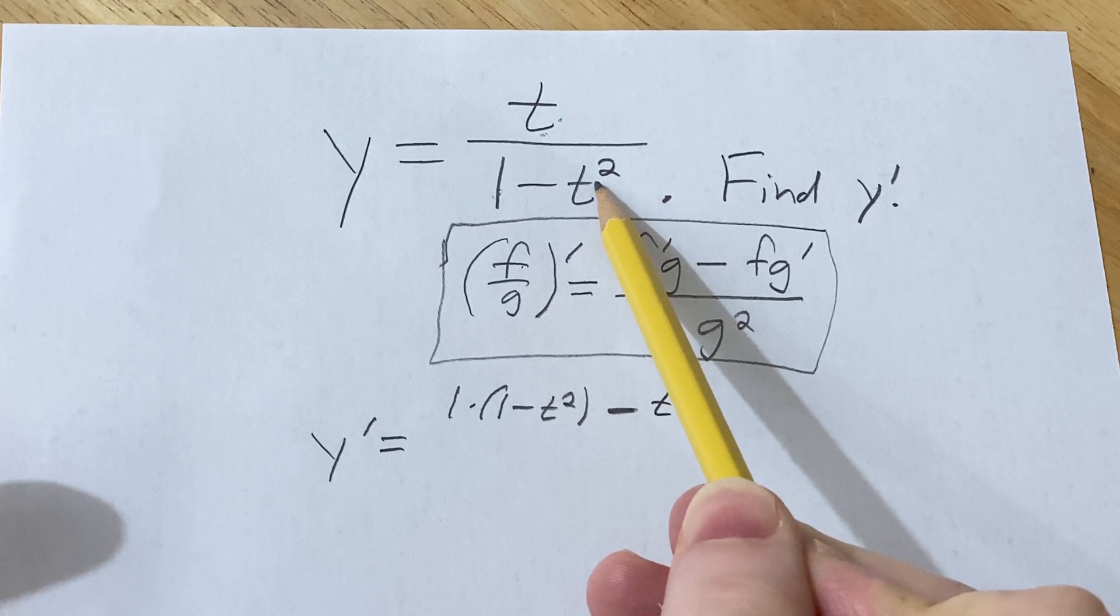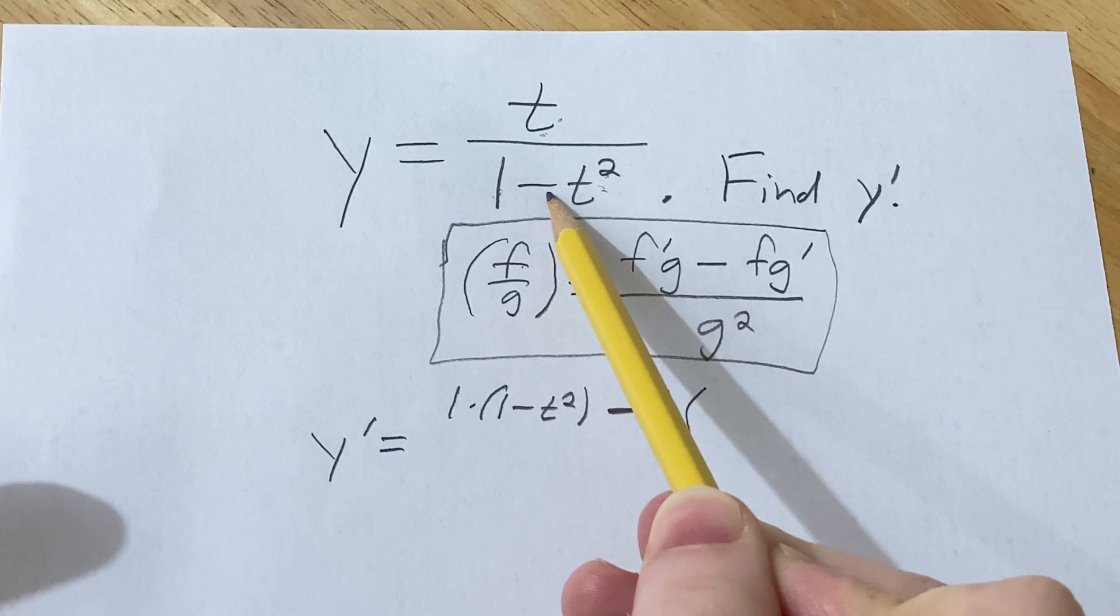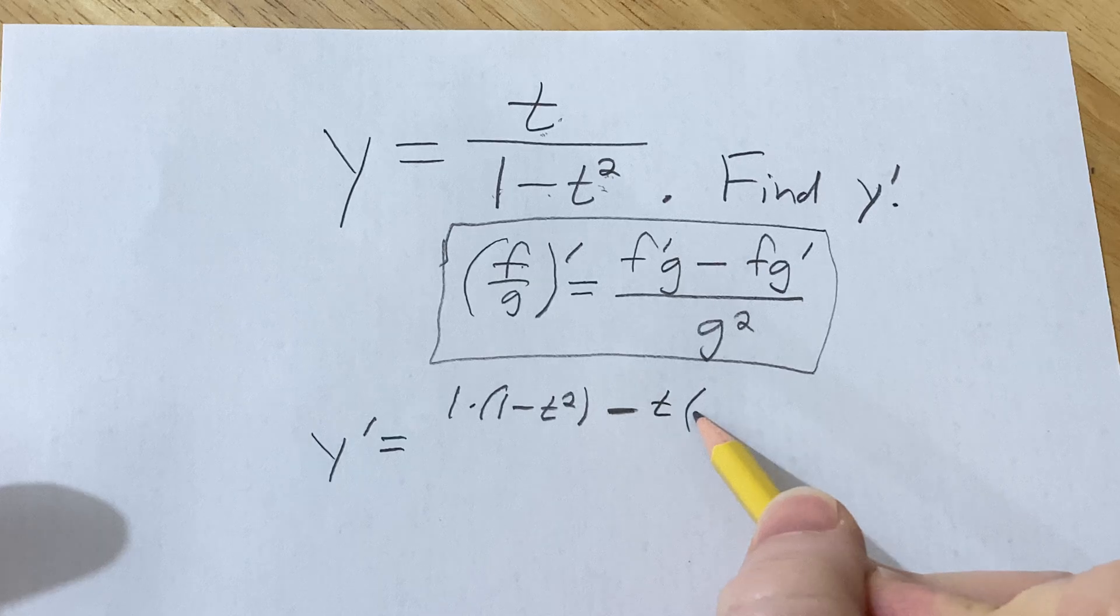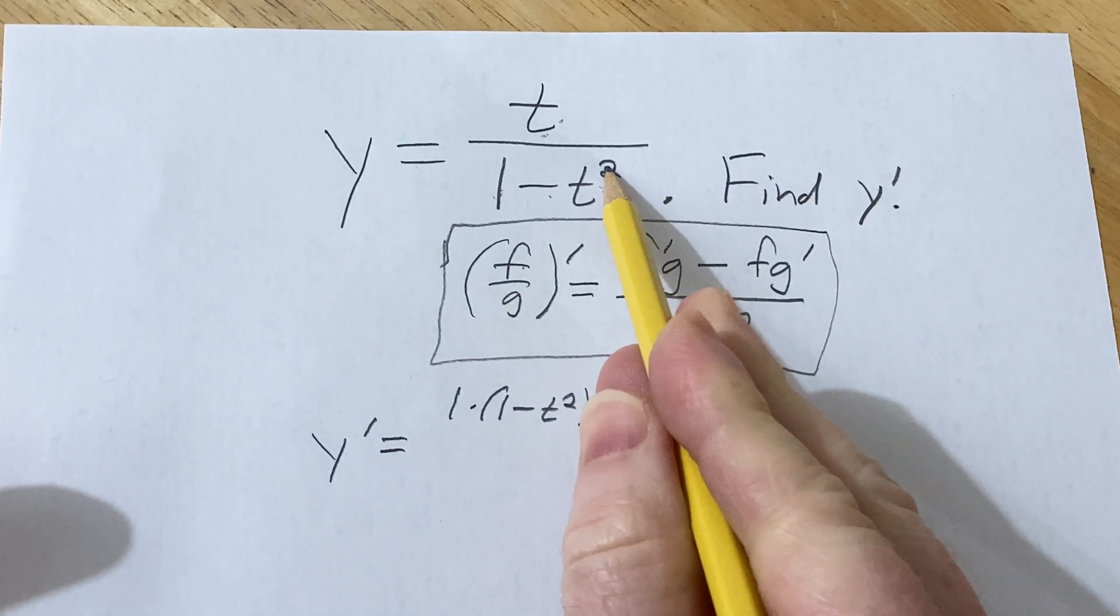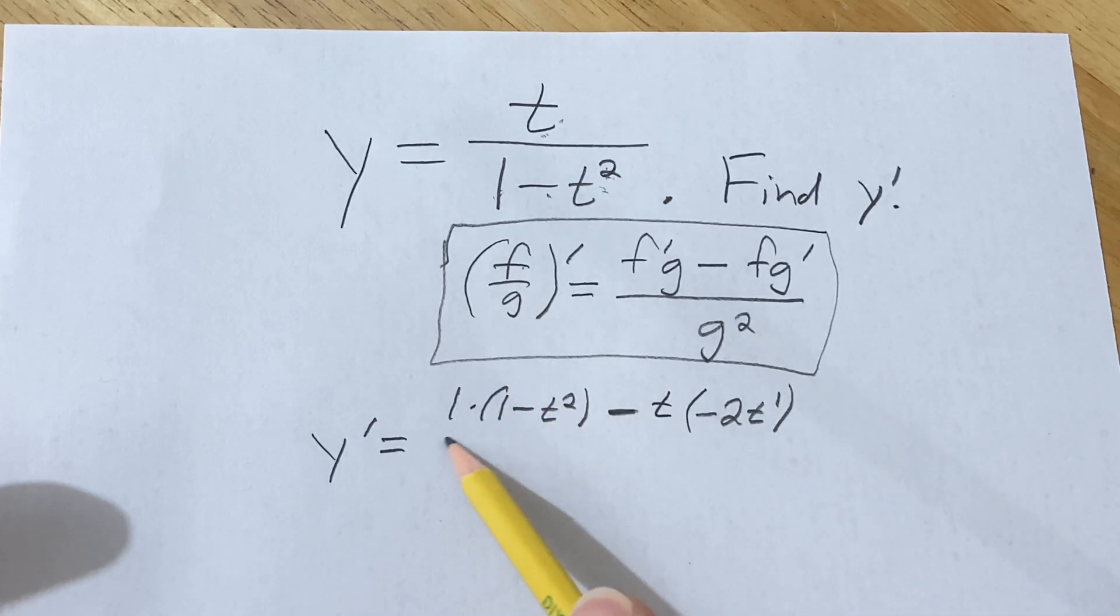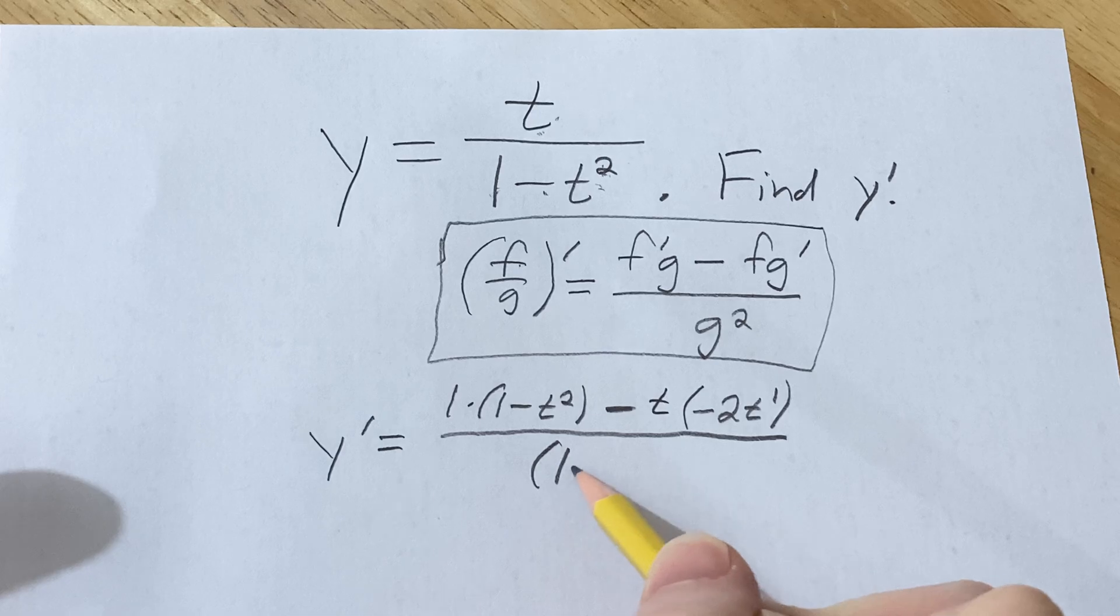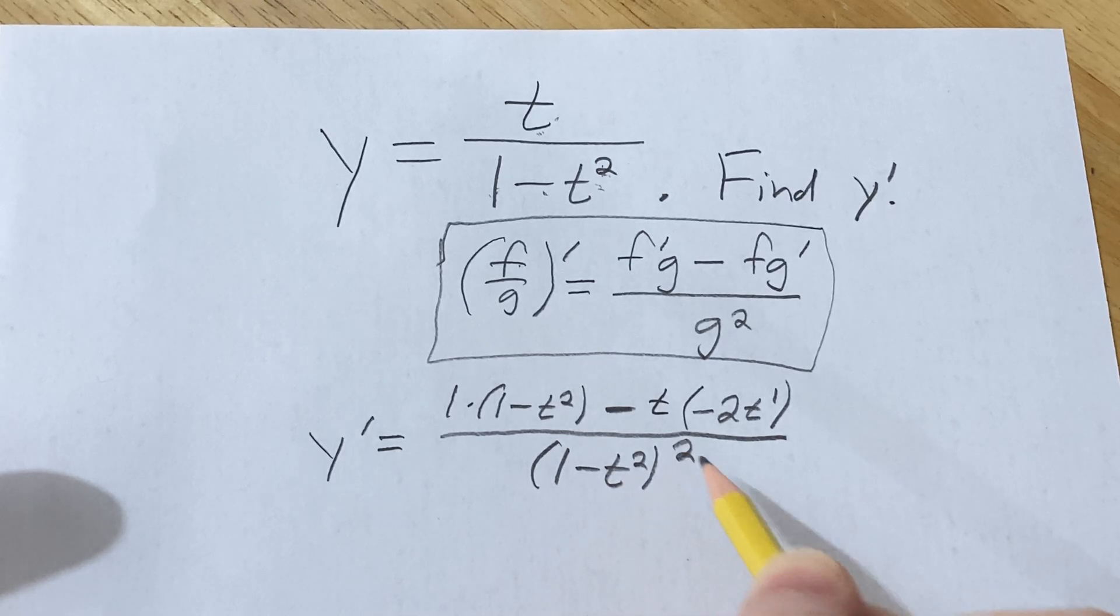Here we're going to use the power rule, so we'll bring down the 2 and subtract 1. So we'll get minus 2t to the first power. Subtract 1 from the exponent and bring this number down. All over the bottom one squared. So parentheses, 1 minus t squared, and then the whole thing is squared.